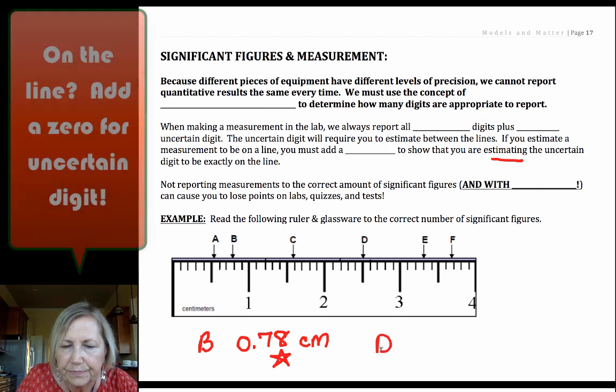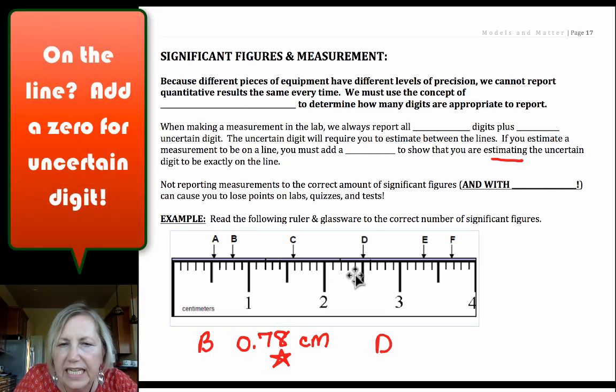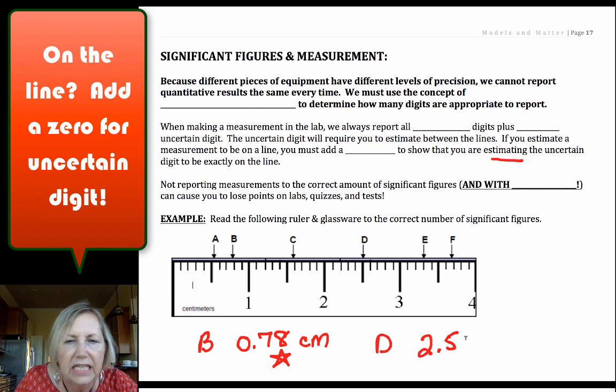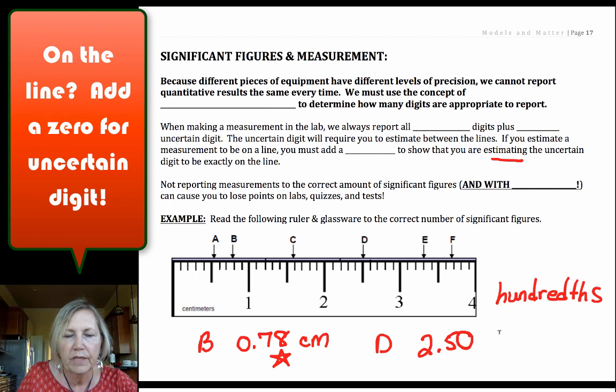Let's take a look at D. I know it's greater than 2 but less than 3. 1, 2, 3, 4, 5. That looks to me like it's right on the line. But it might not to somebody else. Somebody may call that 2.49, somebody may call that 2.51. I'm going to say I think it's on the line, so I'm going to put a 0 there. Once you've determined that this has to be to the hundredths place, every number has to be reported to the hundredths place.